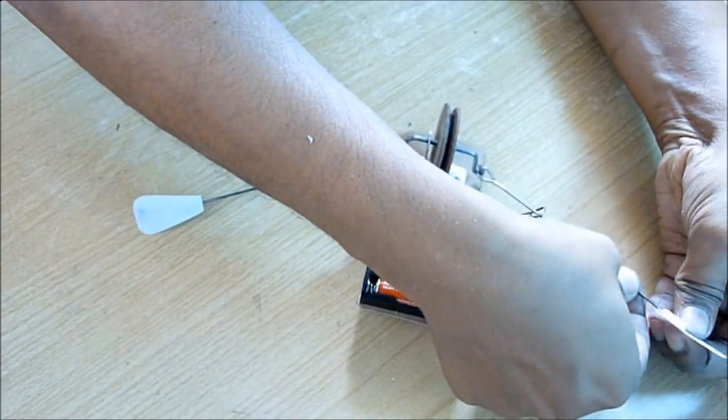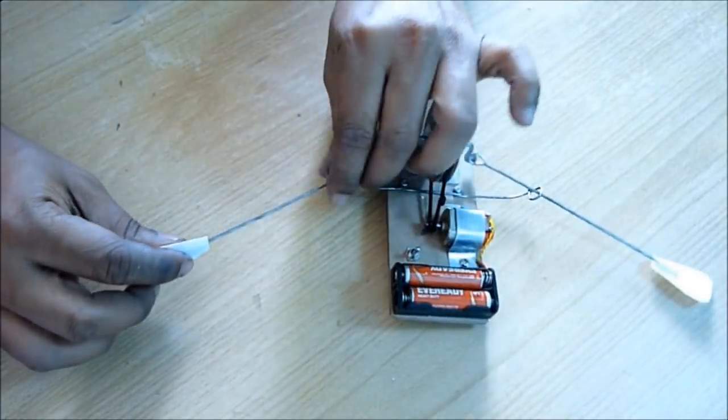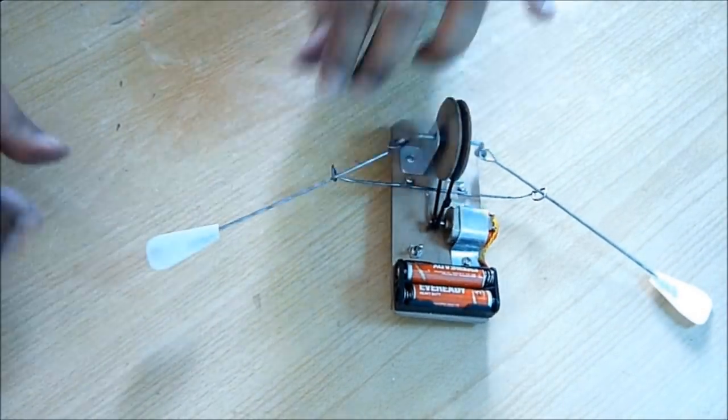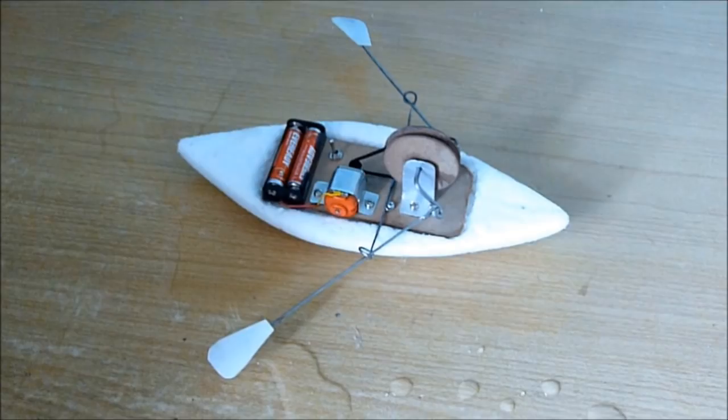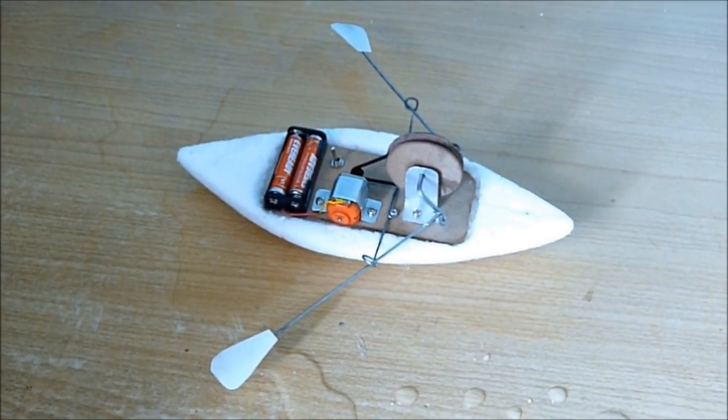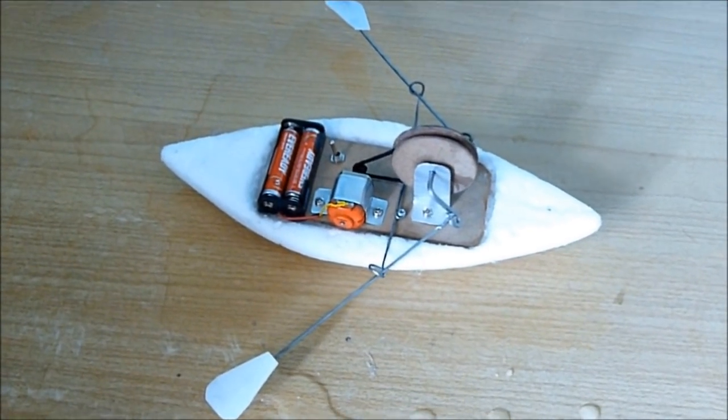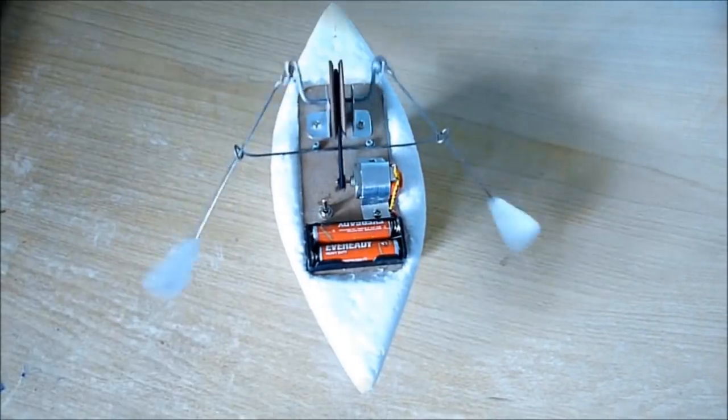You can rotate to adjust the angle of rowing. Now the complete thing is ready. If you switch on, you can see it's rowing. You can see from both sides.